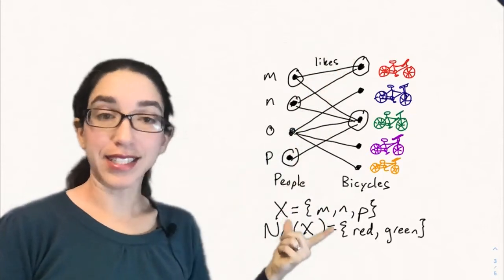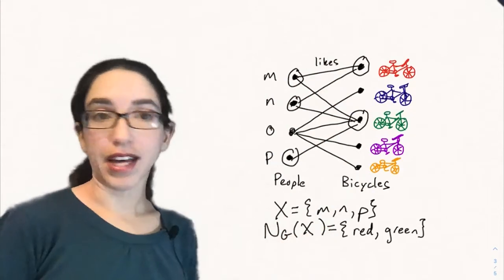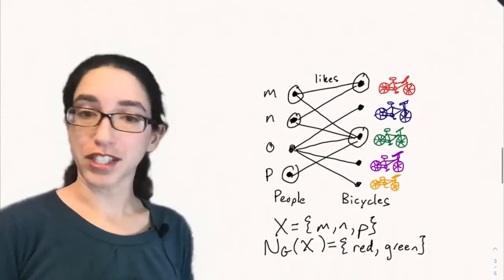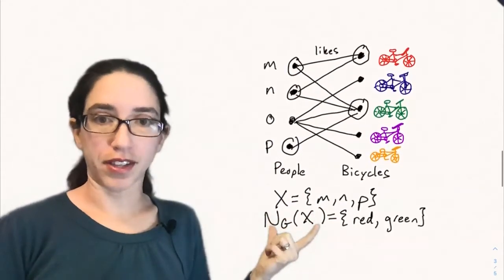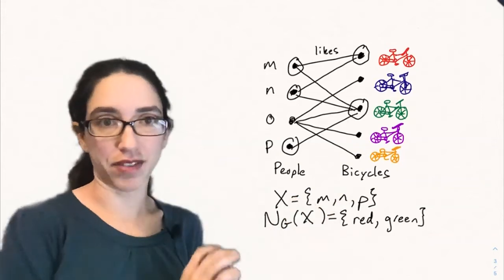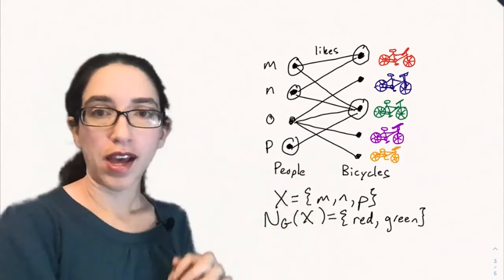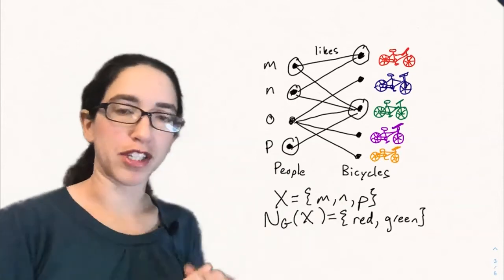Well, the size of the neighborhood is less than the size of X. And that's not what we need for Hall's marriage theorem. Hall's marriage theorem says that the neighborhood has to have size at least the size of X for every possible subset of the people. And so this violates Hall's marriage theorem.